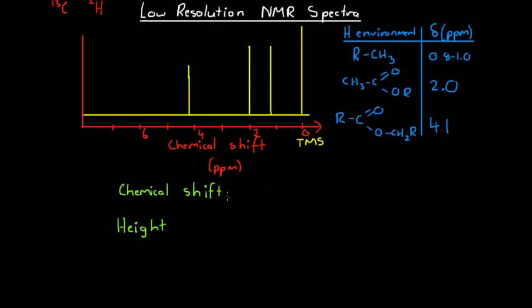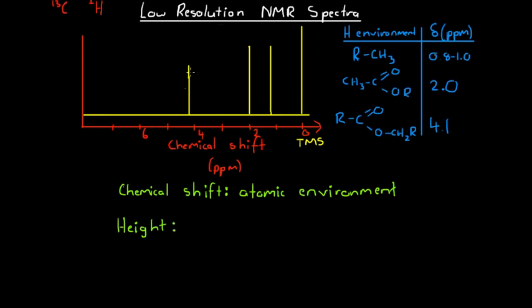Chemical shift helps us identify the atomic environment that the hydrogen is in. As we've got this little list in blue on the right-hand side here, this list tells us what structures are likely to have caused chemical shifts in certain ranges. By looking at and thinking about the chemical shift of our peaks, we can obtain information about the atomic environment of the hydrogen atoms that caused those peaks, or the carbon atoms that caused those peaks.